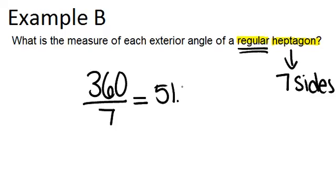...about 51.4 degrees. So the measure of each exterior angle of a regular heptagon is approximately 51.4 degrees. I did have to round that.